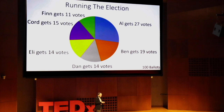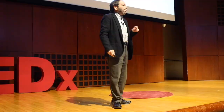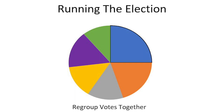Here are our 100 ballots for the Alpha Delta Omicron election. Al gets 27 votes — that's more than the quarter threshold. So we'll lock in the quarter he needed to win and redistribute the excess two votes. Looking at the ballots that voted for Al first, half have Ben second and the other half have Cord second. So we take those two excess votes and divide them: one to Ben and one to Cord.